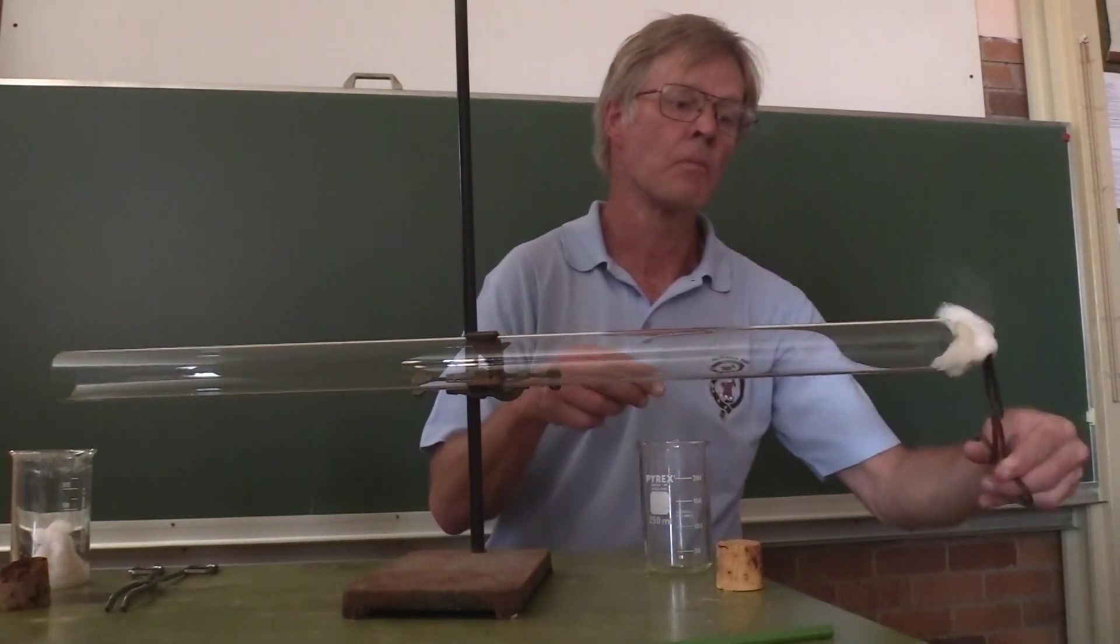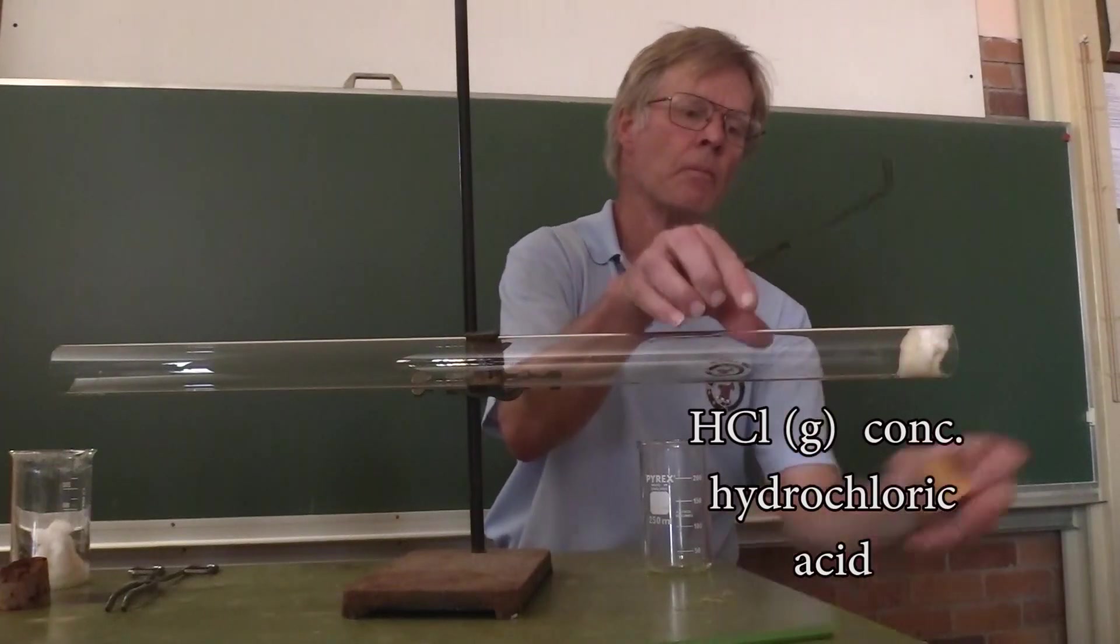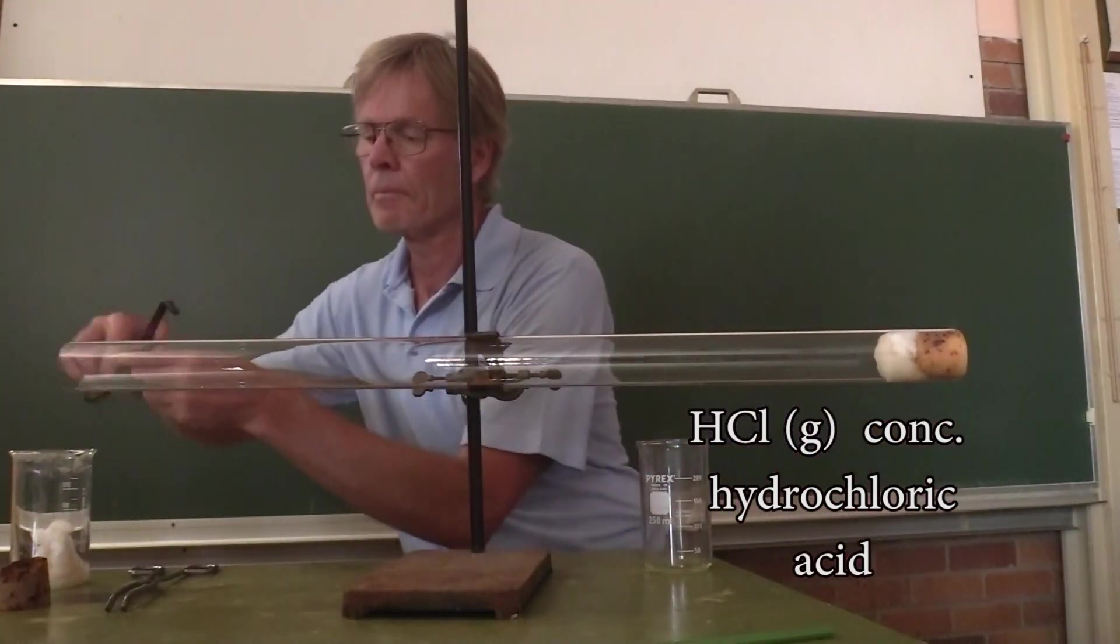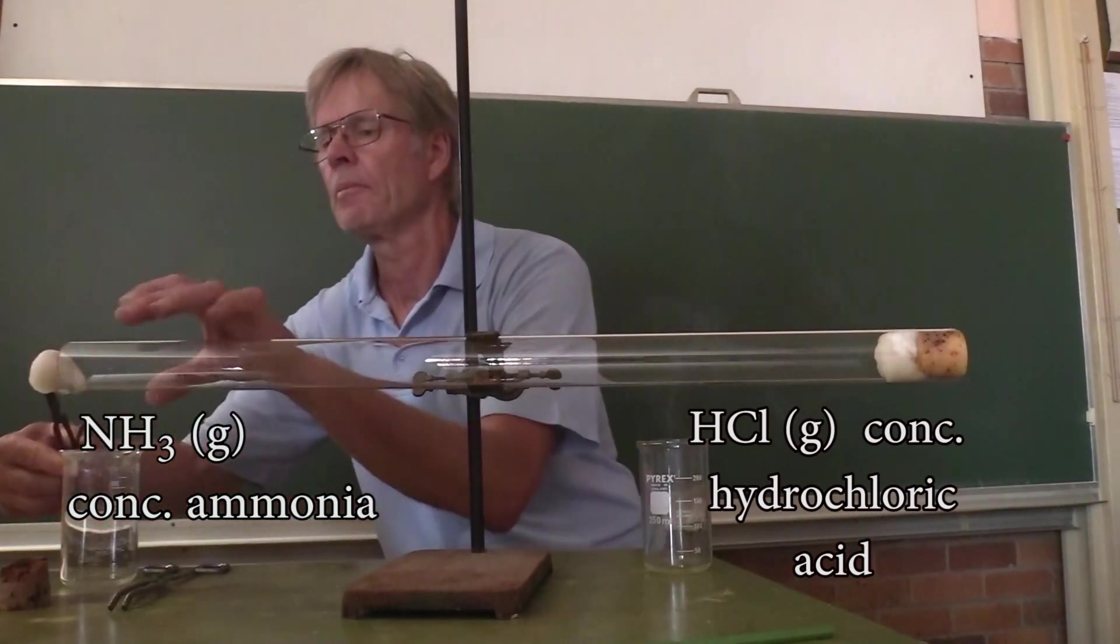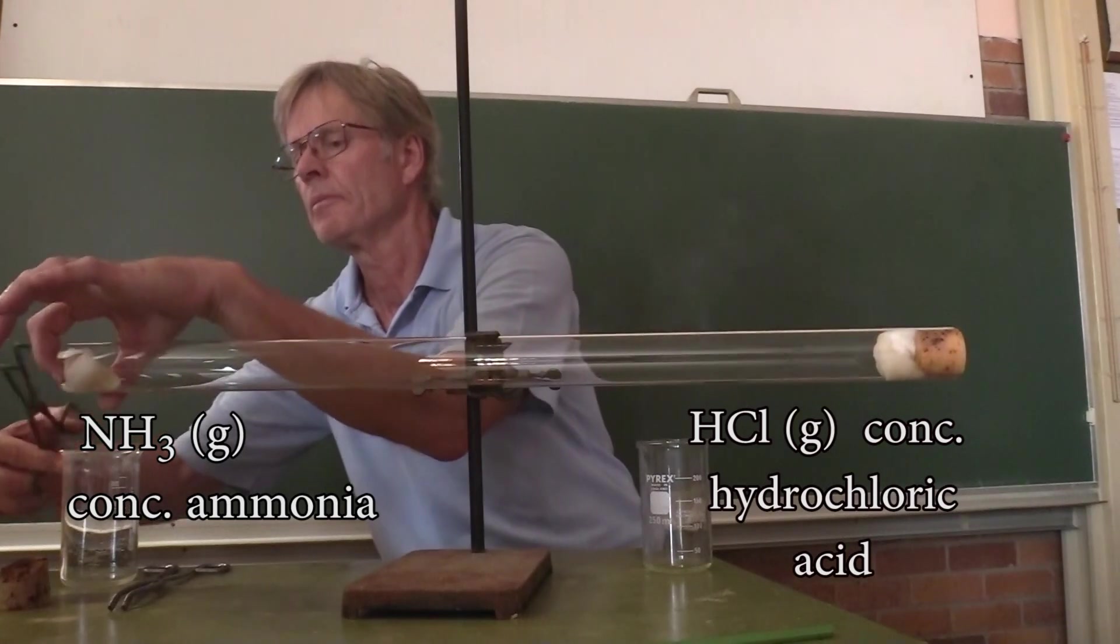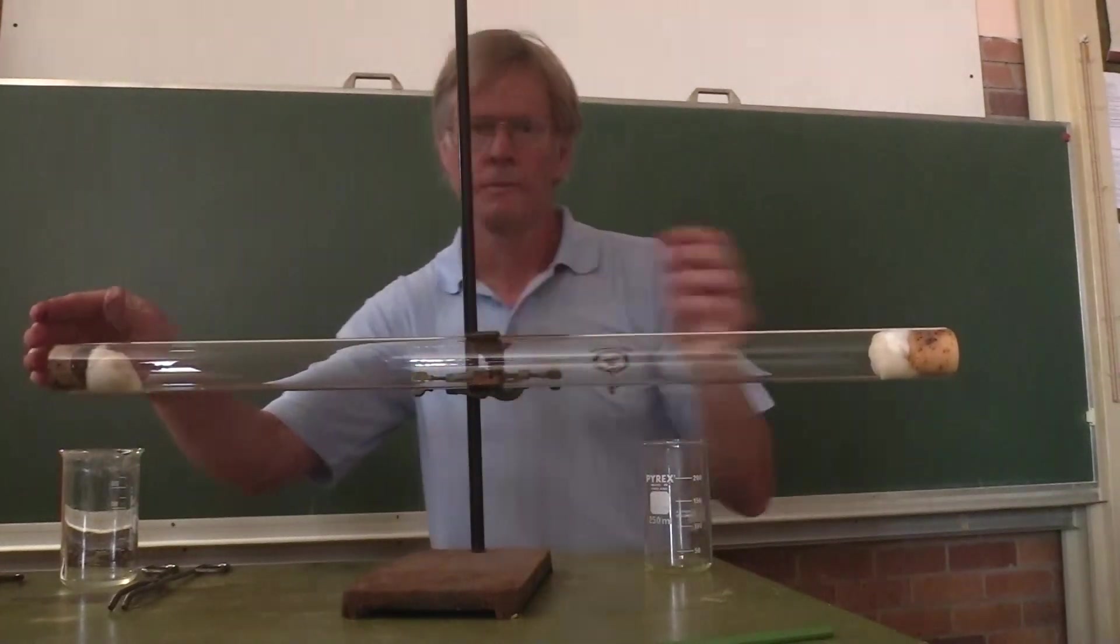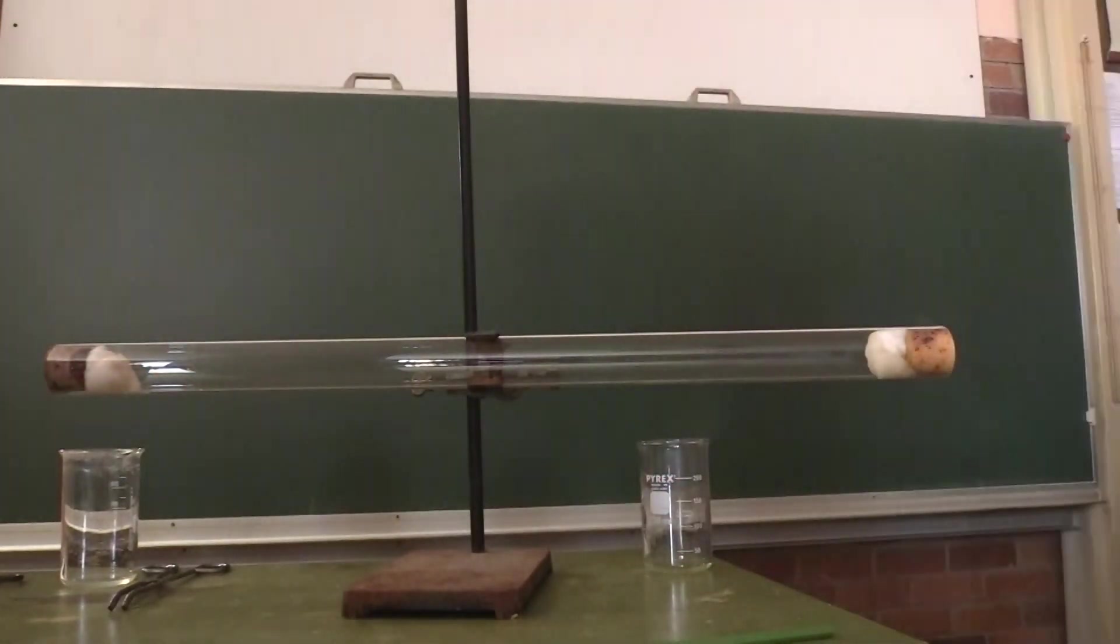So we've dipped some cotton wool into concentrated hydrochloric acid which releases hydrogen chloride gas. We place it in the horizontal glass cylinder and on the other side some cotton wool with ammonia. Now we leave it for some time.